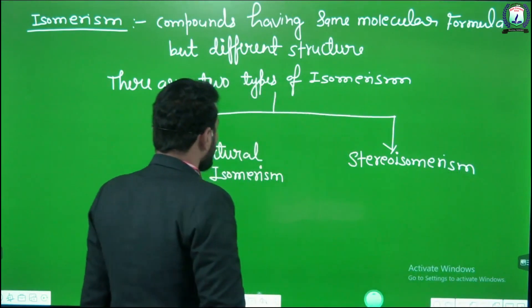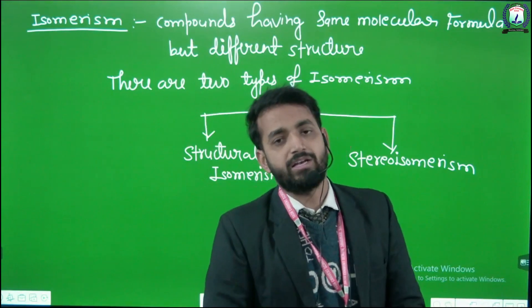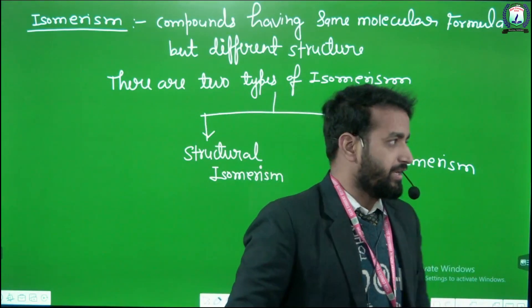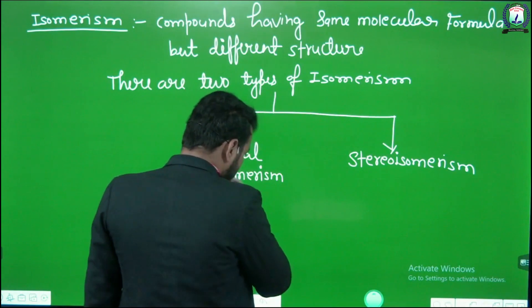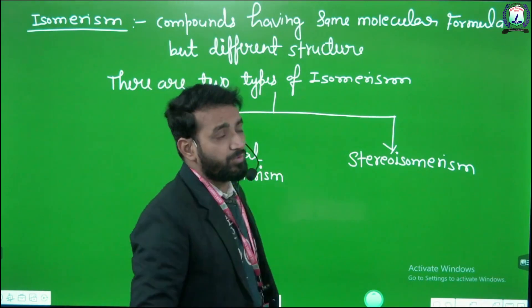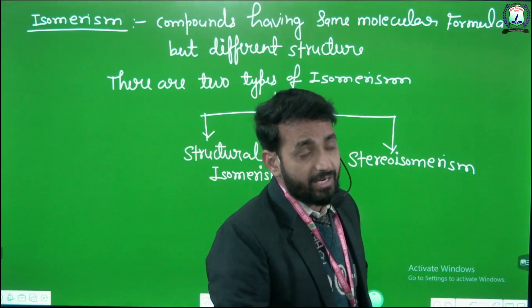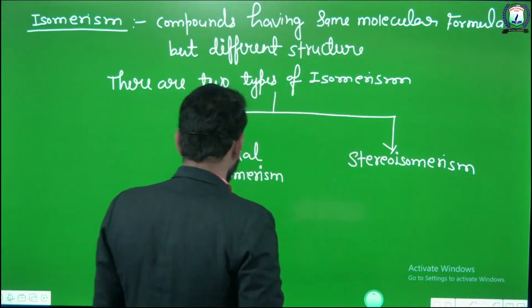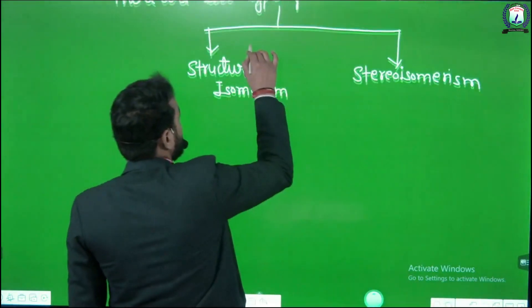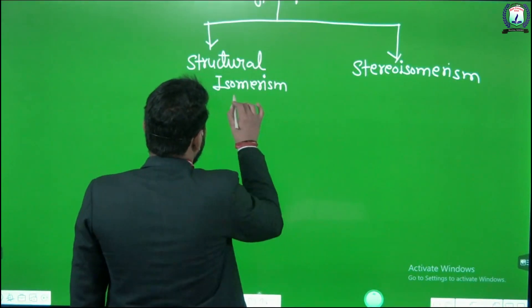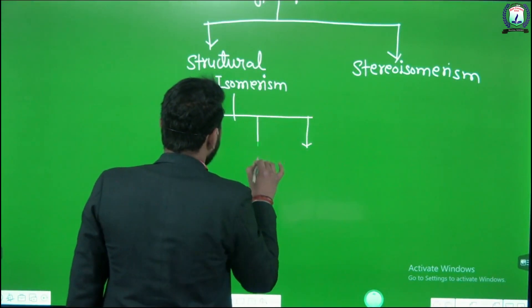So isomerism is of two types. And there are four types of structural isomerism which we will discuss in Class 11th.